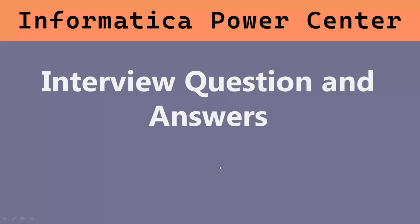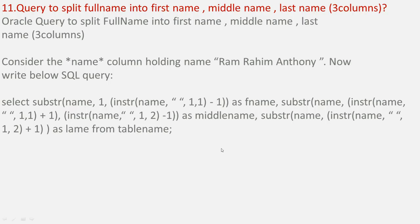Welcome to Informatica PowerCenter interview questions and answers. Today we are discussing at least 10 questions. The first question is: how to split a full name into first name, middle name, and last name? We have to split the name into three columns. For that, we will consider a full name column holding the value 'Ram Rahim Antoni'.